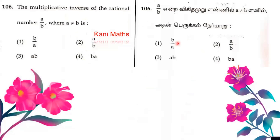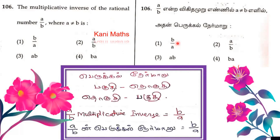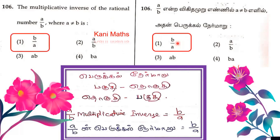Question number 10. The multiplicative inverse of the rational number a by b, where a is not equal to b. That means the multiplicative inverse of a by b is equal to b by a. So a by b multiplied by b by a equals 1.